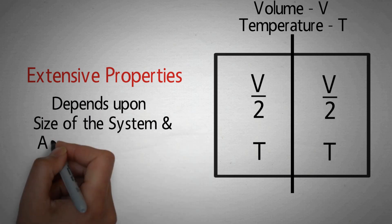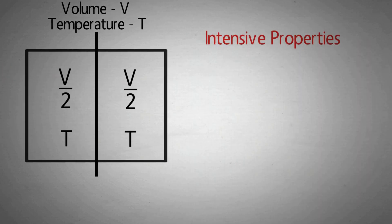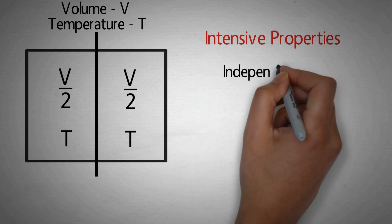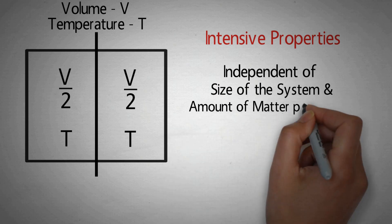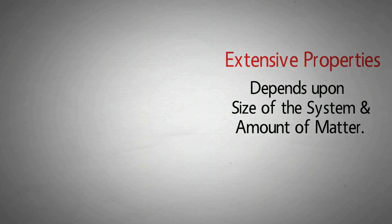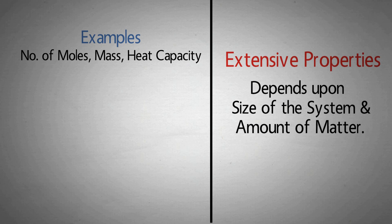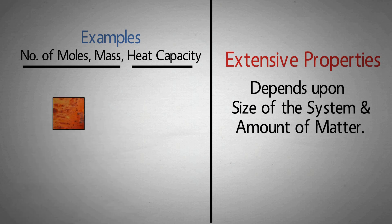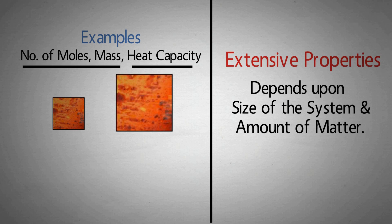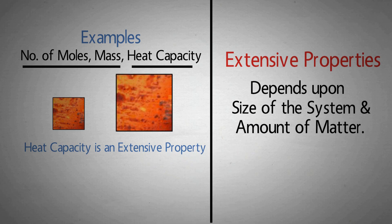Extensive properties are those which depend upon the size of the system and amount of matter present in it. Temperature is an intensive property — intensive properties are those which are independent of the size of the system or amount of matter present in it. These properties depend only upon the nature of the substance. Extensive properties के और examples: number of moles, mass, heat capacity. Heat capacity is the amount of heat a body can store — एक छोटा iron block कम heat store करेगा, पर बड़ा block ज्यादा। So this is an extensive property.